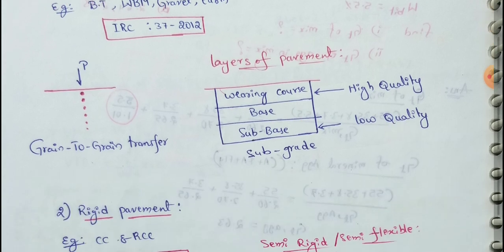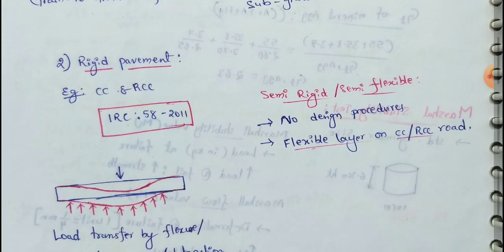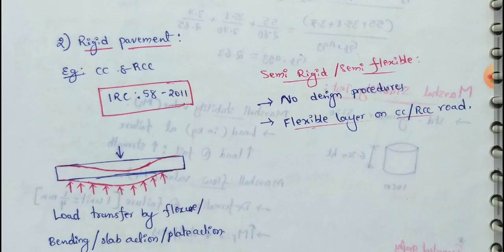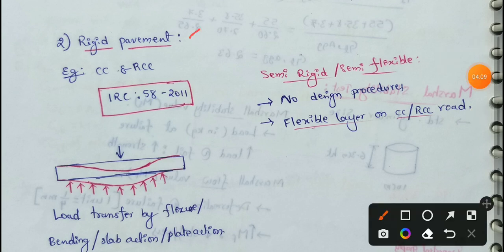In this case, we have an example of CC roads or RCC roads, which is an example of rigid pavement. The design is based on IRC 58-2011. In this case, we will use this design.